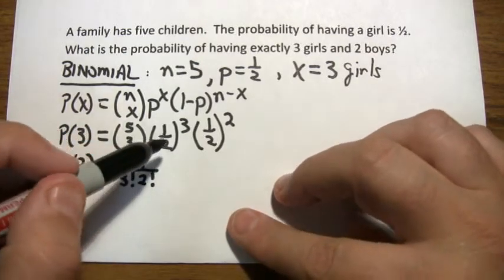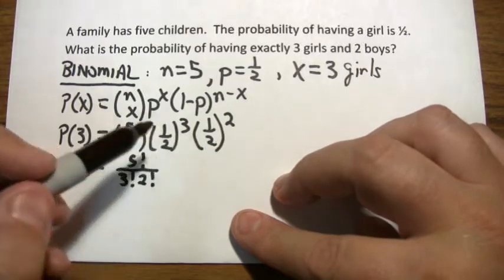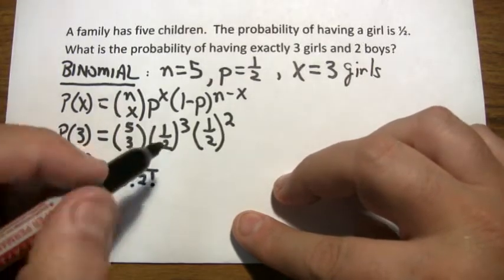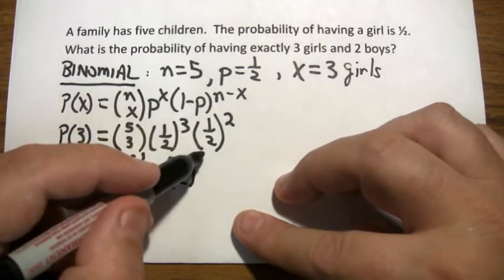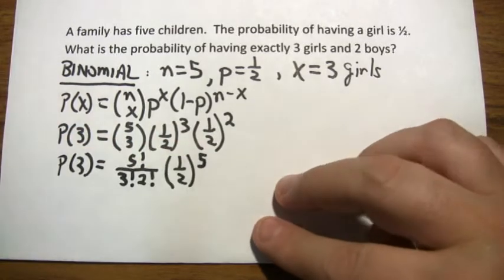And then you normally can't do this, but when the bases are the same, they're both a half, that doesn't happen all the time. But when it does, you can save yourself a little bit of work by realizing that that's one-half to the three plus two, one-half to the fifth power.